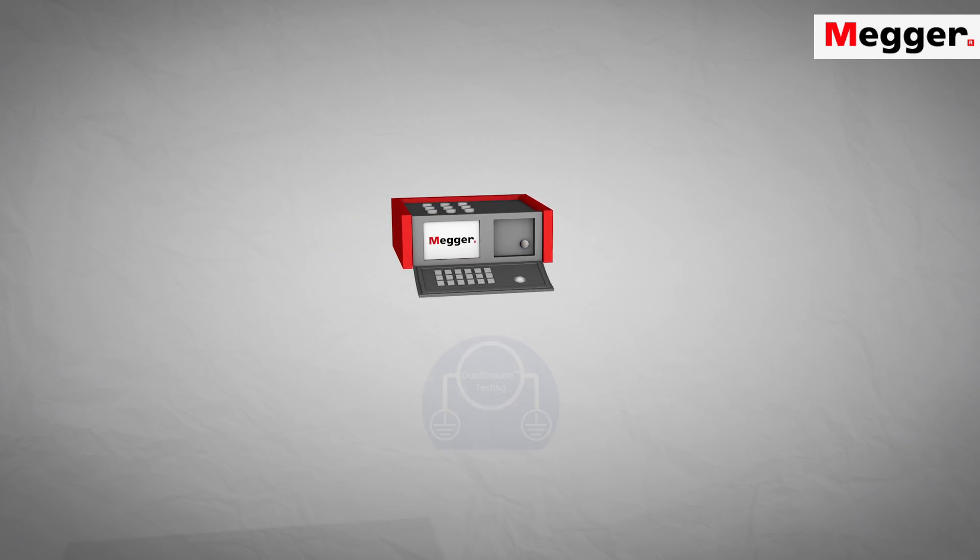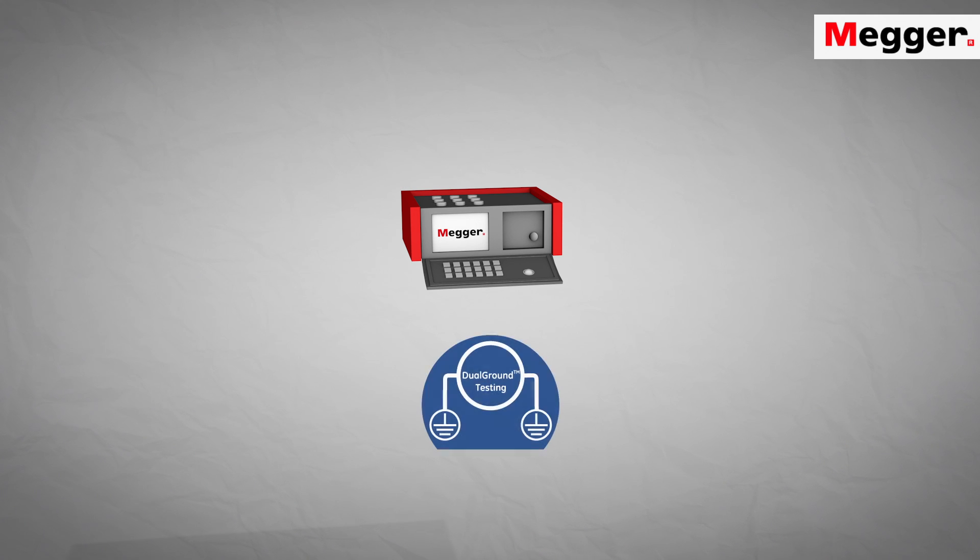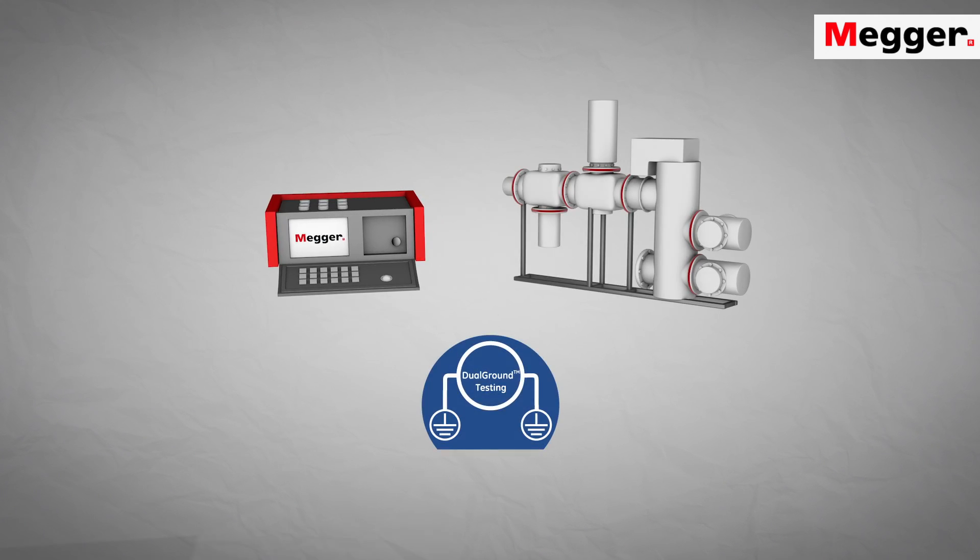With the TM1800 and the dual ground method, you can also time gas insulated switchgear and generator circuit breakers without removing ground connections. Read more about Megger circuit breaker testing at Megger.com